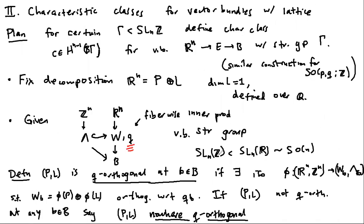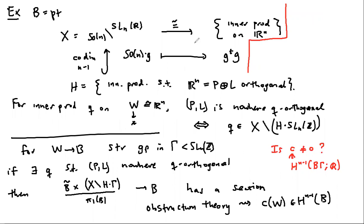By choosing different decompositions, you can show that you get linearly independent classes, at least by passing to further finite index subgroups. The question of non-vanishing is the meat of the theorem — you've built the construction, but now you have to show you get non-zero classes and lots of them.